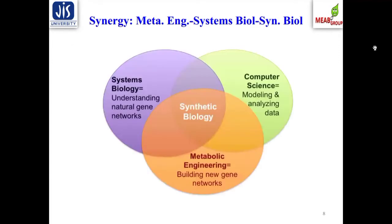This clearer view shows how these three fields merge and ultimately give rise to synthetic biology. Systems biology allows understanding of natural gene networks; computational science enables modeling and analysis of datasets including omics databases. Systems metabolic engineering allows rearrangement and reconstruction of different segments of the gene network, ultimately improving or switching over the productivity of your desired target molecule. Together, systems biology, computational science, and metabolic network engineering give rise to the new field of synthetic biology.